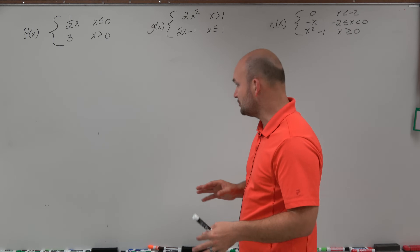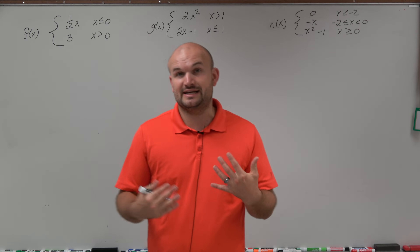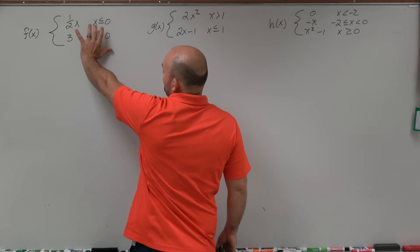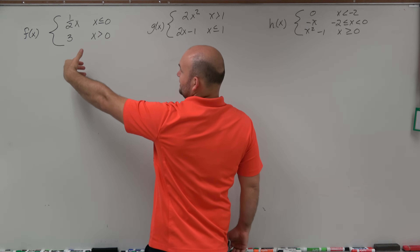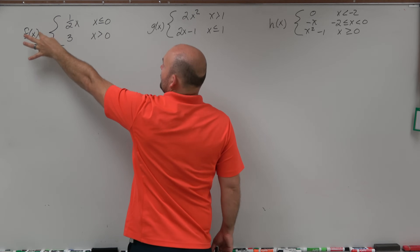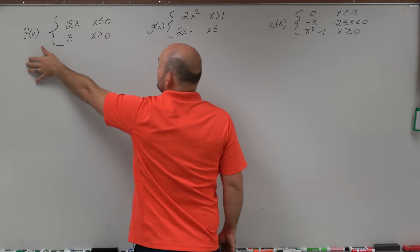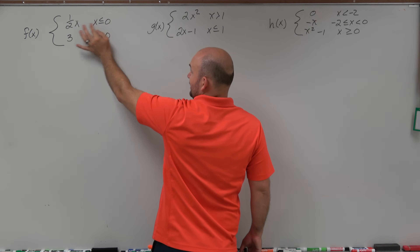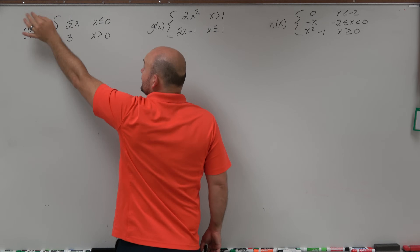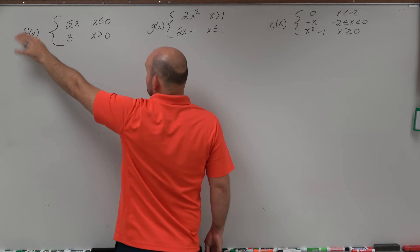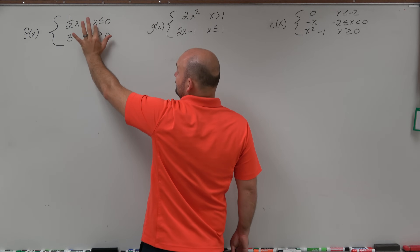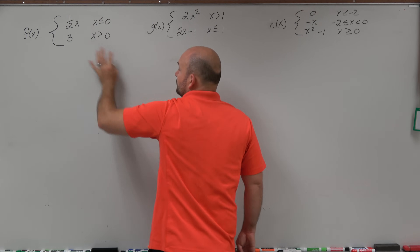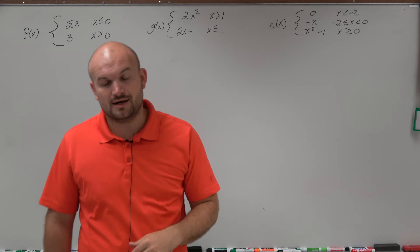When graphing piecewise functions, basically all we're doing is graphing each of those functions correctly and then abiding by the constraint. What this piecewise function means is the value of f of x is one half x for only input values — x values — that are less than or equal to zero. And we're going to use the bottom function for only values that are greater than zero.